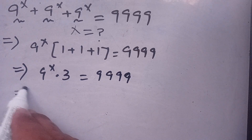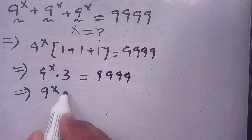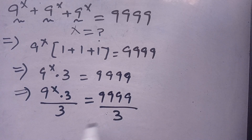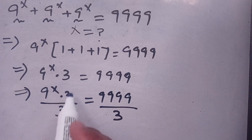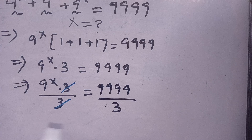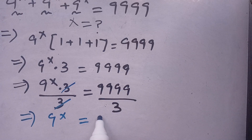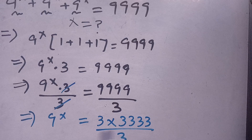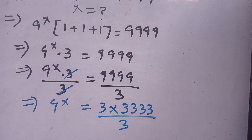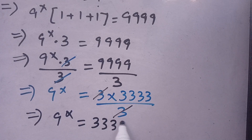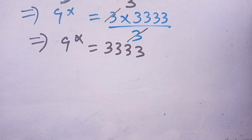Now, dividing both sides by 3, we get 9 power x times 3 divided by 3 is equal to 9999 divided by 3. We can cancel out the 3s, and we have 9 power x is equal to 3333. This can be broken down as 9999 equals 3 times 3333, divided by 3, and cancelling gives us 9 power x is equal to 3333.